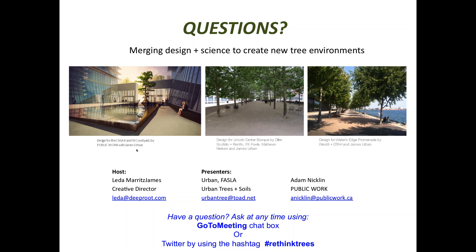One thing I've observed is that the more we try to make very precise geometries with a living object such as a tree, the more likely you're going to get in trouble. You can't expect to do 50 trees and have them all alike — just like I only have two children and I still can't figure out, even in their 30s, why they didn't turn out exactly the way I wanted them to. Trees are not a whole lot different.